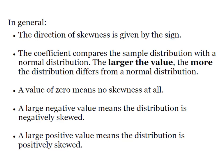When we interpret the coefficient, we know that if we get a value of zero then our distribution is not skewed at all and it will be normally distributed. If we have a large negative value, then our distribution is skewed to the left. If we have a positive value, it means the distribution is skewed to the right, or positively skewed.